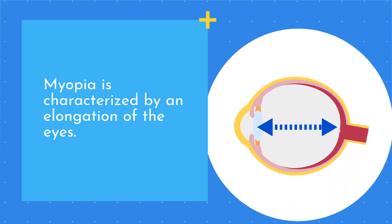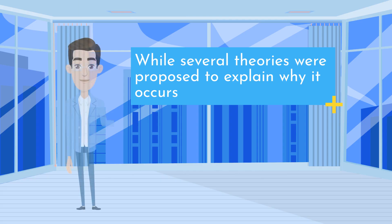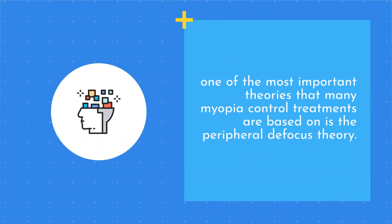Myopia is characterized by an elongation of the eyes. This causes light entering the eye to focus in front of the retina instead of directly on it, resulting in blurred distant vision. While several theories were proposed to explain why it occurs, one of the most important theories that many myopia-controlled treatments are based on is the peripheral defocus theory.